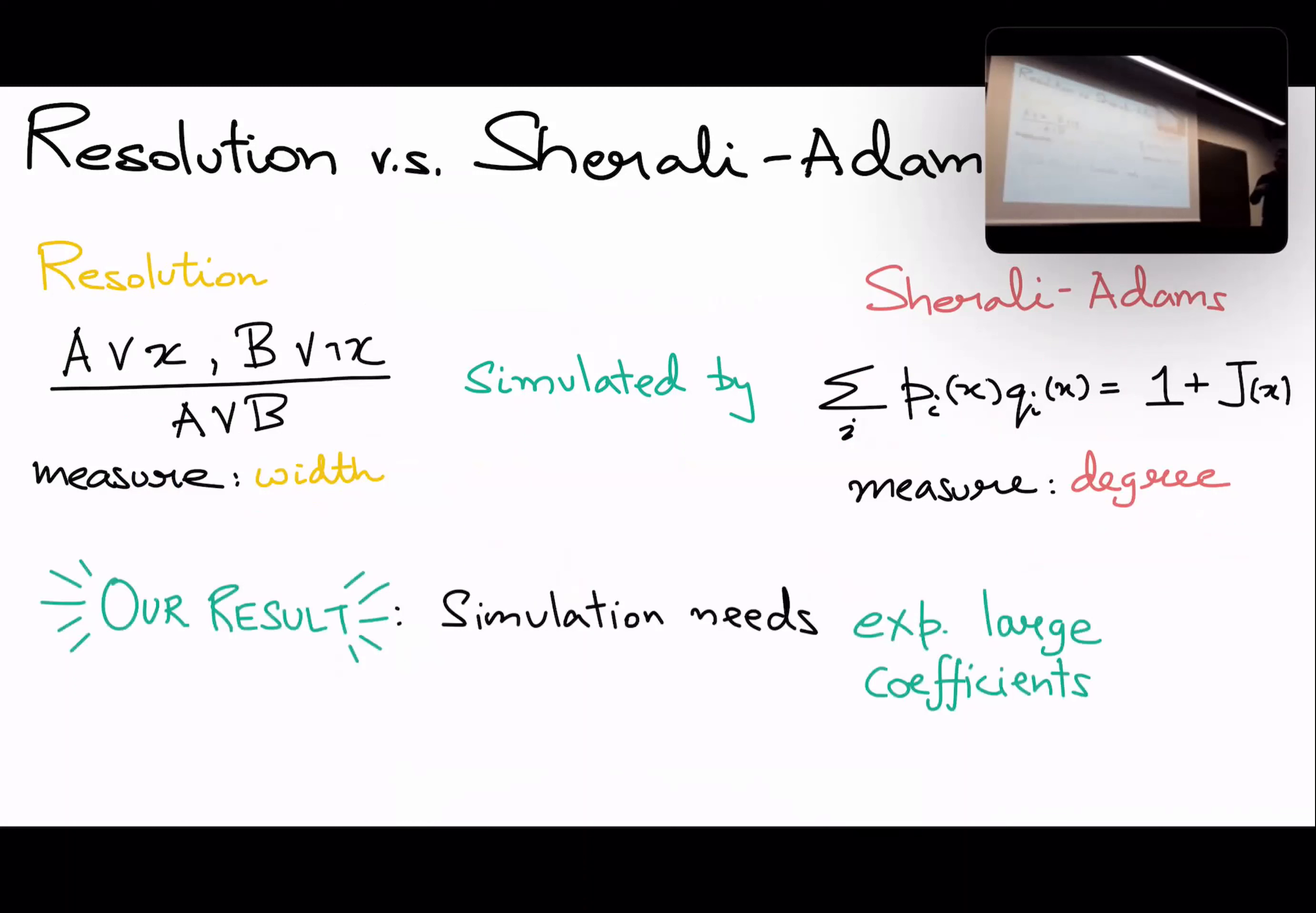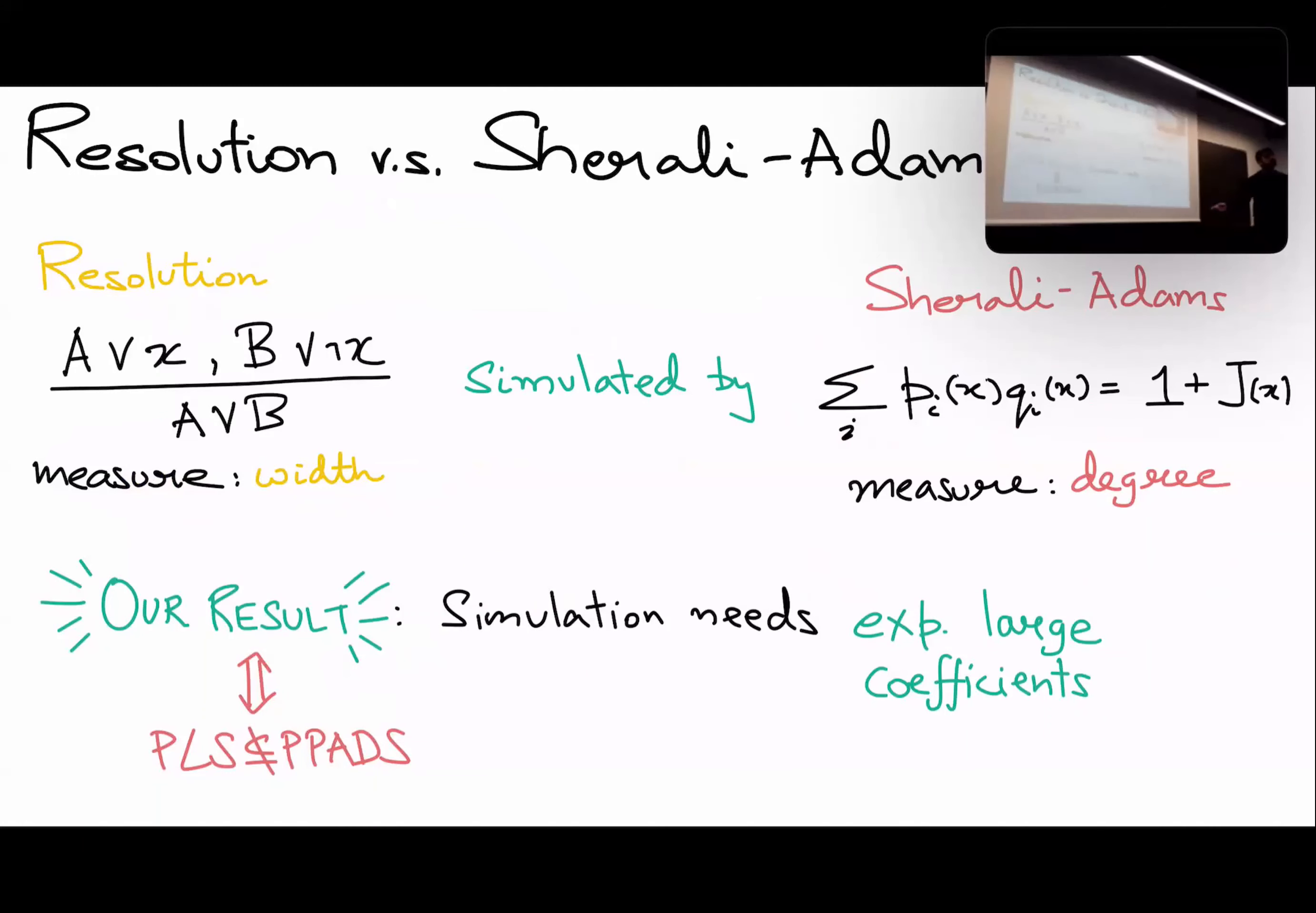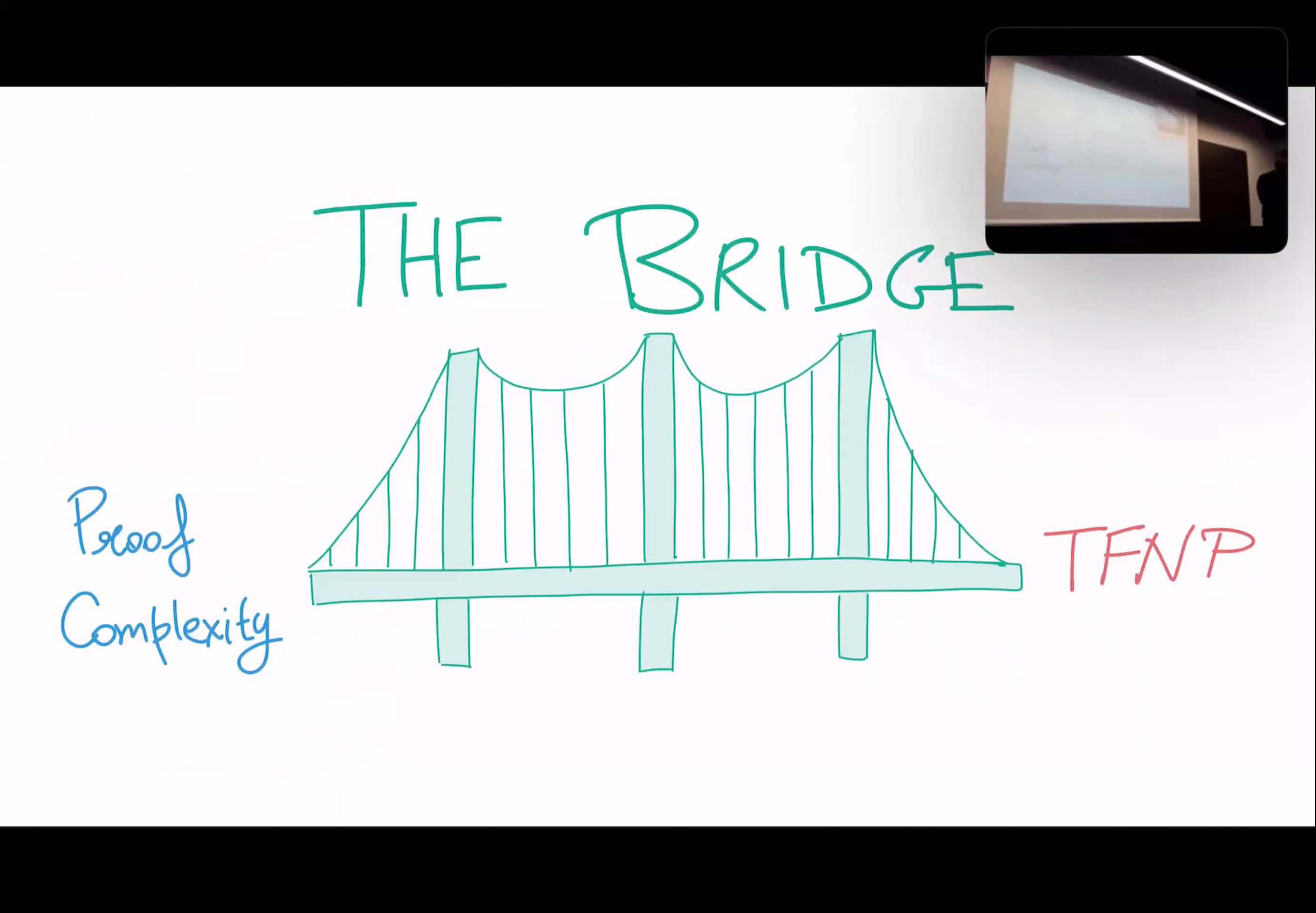Okay. So, it's well known that resolution is simulated by Sherali-Adams. What we prove is that this simulation actually needs to exploit exponentially large coefficients. So in particular, if you encode the coefficients of Sherali-Adams in unary, then resolution is not simulated by unary Sherali-Adams. Now, I showed you two very different looking results. Is this a practice type paper where we prove two completely different things? No. This result is actually equivalent to PLS not in PPADS with respect to an oracle.